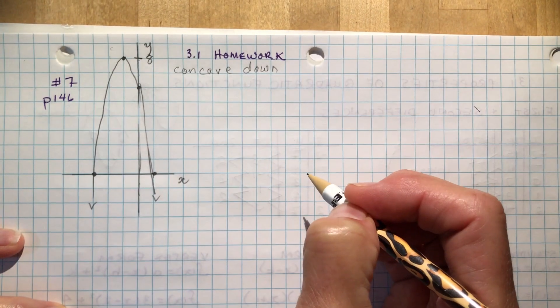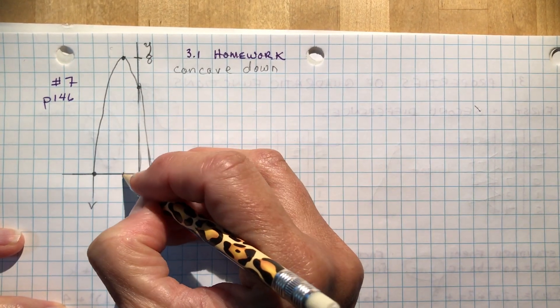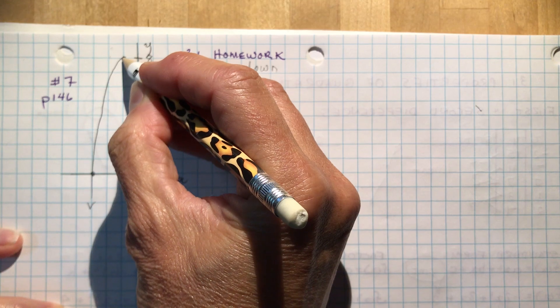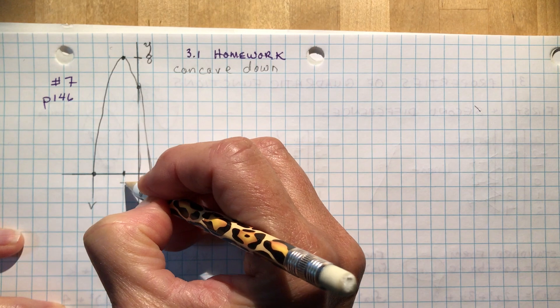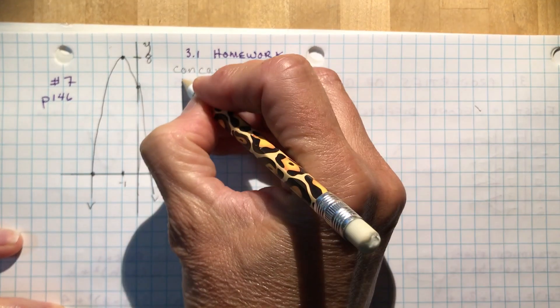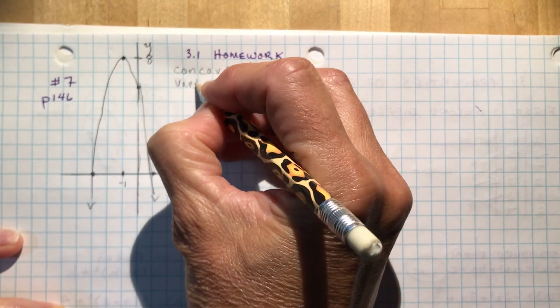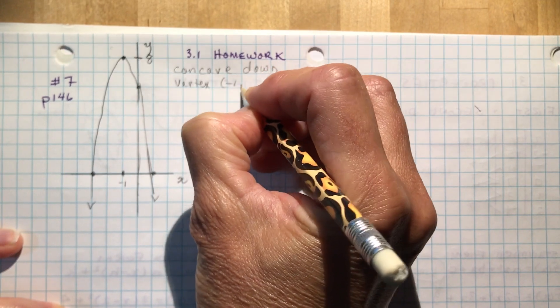State the coordinates of the vertex. Well, find them. Here's a vertex here, right? This is a vertex. The vertex is the highest or the lowest point on a parabola. So this is minus 1 and 8. So the vertex is minus 1 and 8.